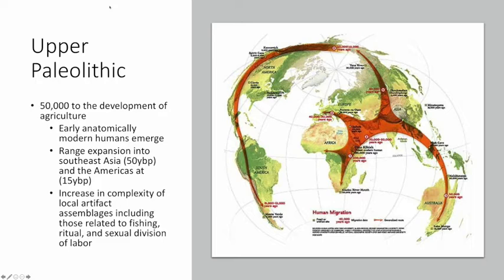If we're thinking about the Upper Paleolithic, one of the things we see in the archaeological record is the increasing complexity of cultural artifact assemblages — the tools. We see Homo sapiens beginning to depend upon fishing in this period, which wasn't seen in earlier prehistory. We see existence of ritual, and some would argue religion. And we see a sexual division of labor — evidence that male and female Homo sapiens are beginning to do different tasks or roles in their local group.